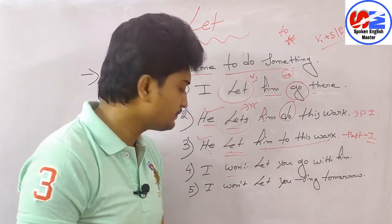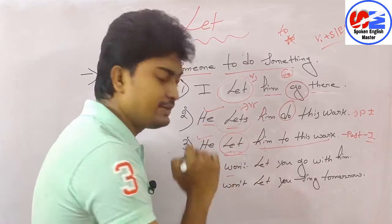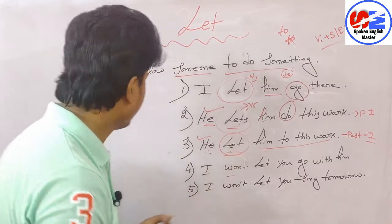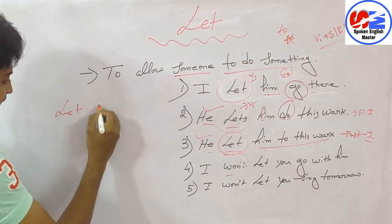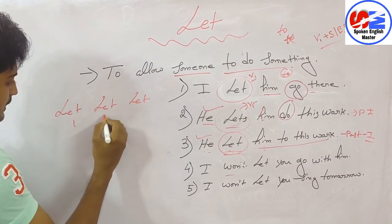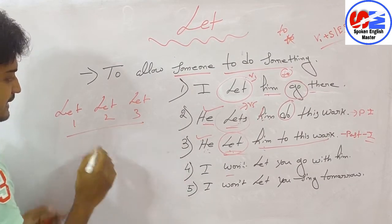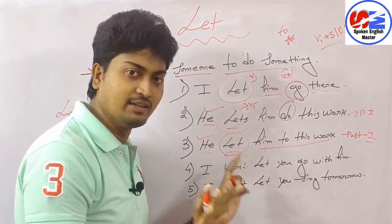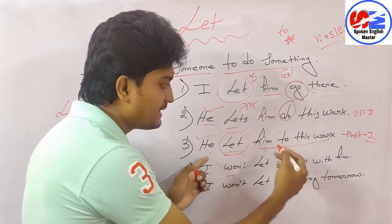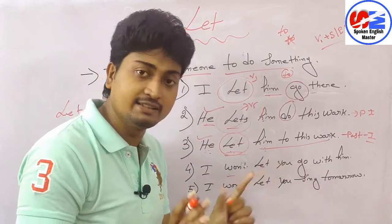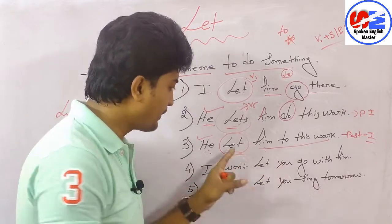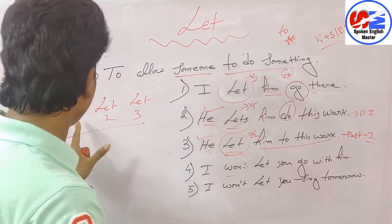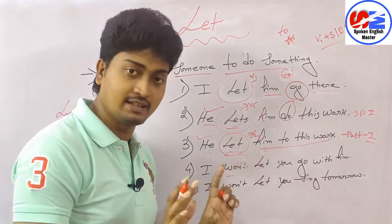Now you will ask: sir, if I'm talking about past tense, V2 has to be used — so have I used V2? Yes, I have. The formation of LET is: LET, LET, LET — V1, V2, V3 are all the same. All three forms of LET are identical. That's why no -s was added there — because LET in past tense also looks the same. So 'He let him do this work' — that LET is V2, not V1.